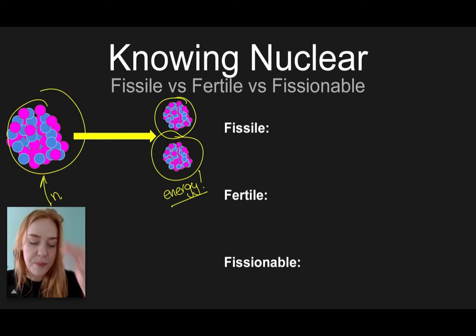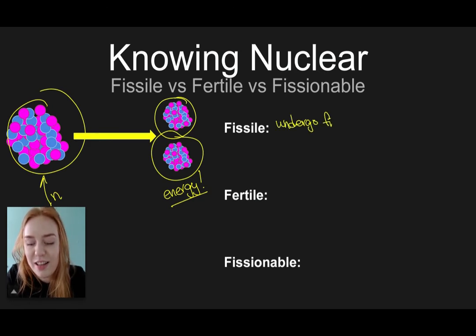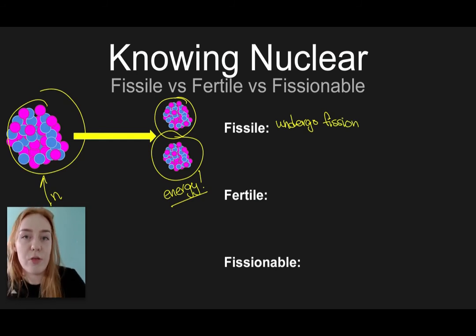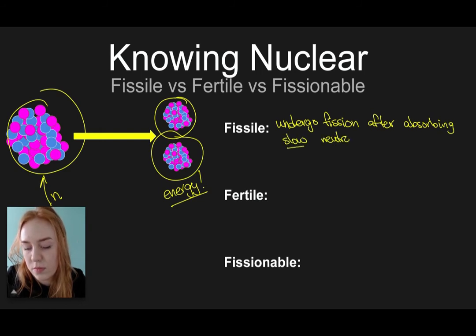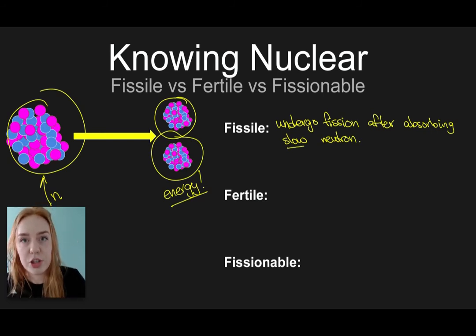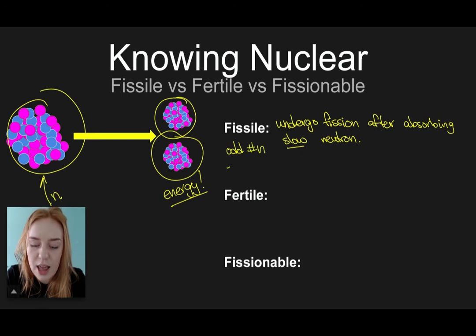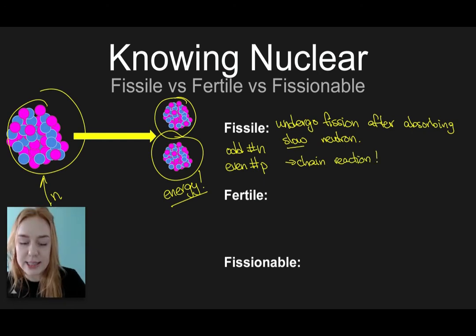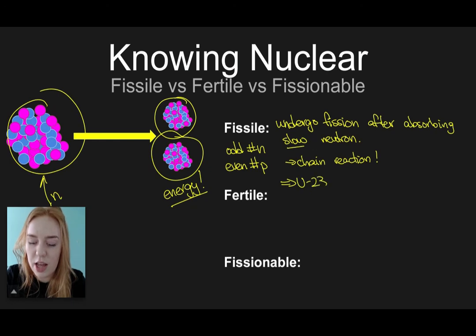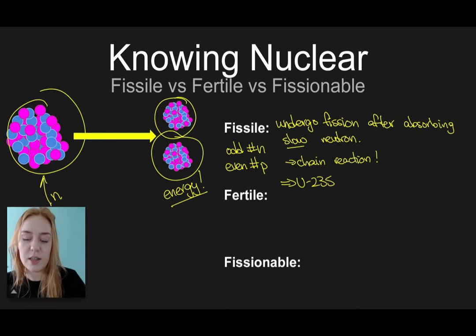It's this energy that we're interested in for the purposes of nuclear reactors and nuclear energy. Now let's look at fissile materials. Fissile materials can undergo fission, but only after they absorb a slow-moving neutron — sometimes these slow neutrons are also referred to as thermal neutrons. Fissile materials typically have an odd number of neutrons and an even number of protons, and they can sustain chain reactions. A perfect example of a fissile material is uranium-235.